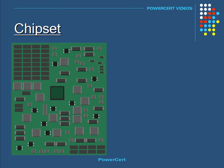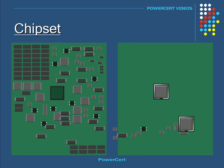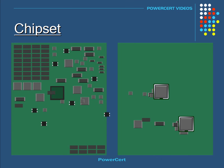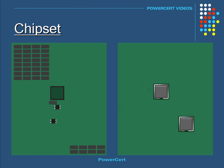They had a lot of different chips controlling different functions on the motherboard. As technology progressed, computer engineers decided to reduce the number of chips and have them more in a centralized location. So instead of having these different chips scattered all over the motherboard, they reduced the number of chips and condensed them to only a few chips, or what's now called a chipset.